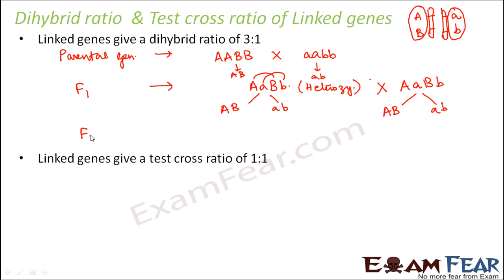So now what would be the F2 generation? So for F2 generation, this can combine with this or this can combine with this or this can combine with this. These are the only possibilities. So what would be the output?